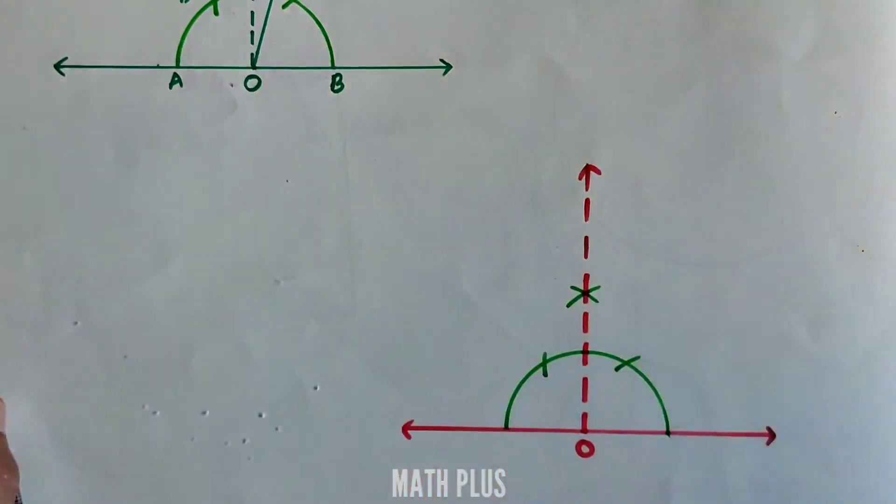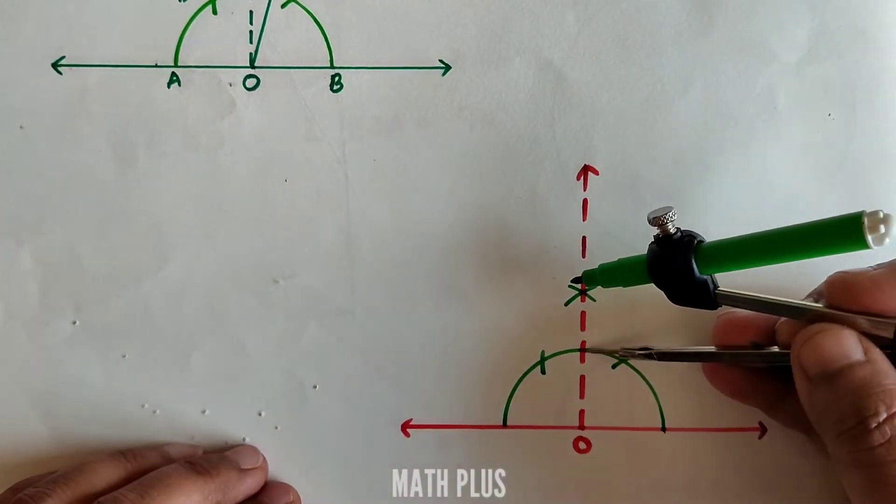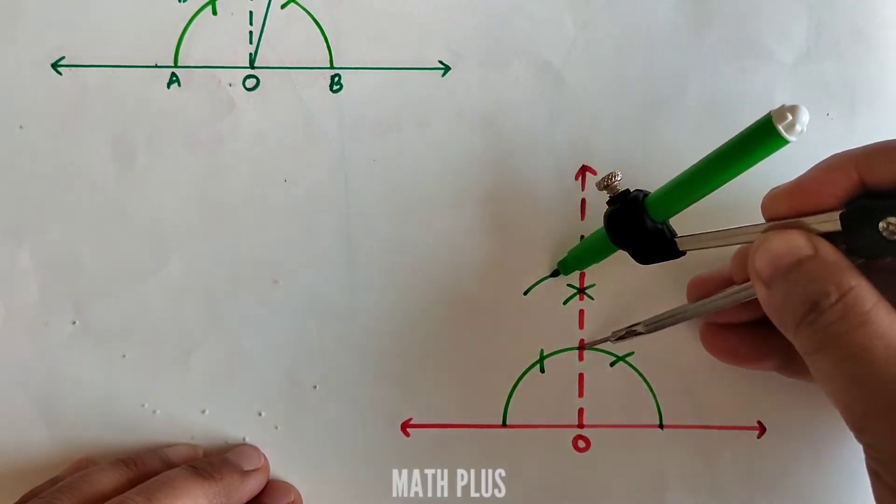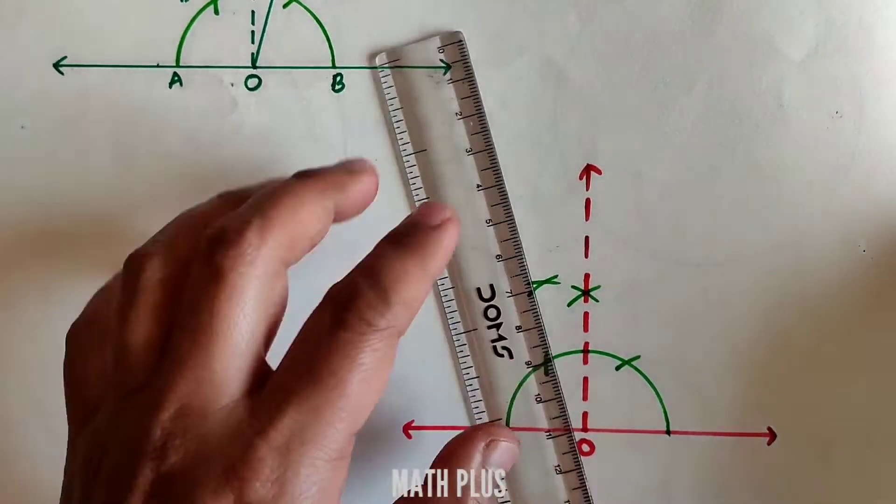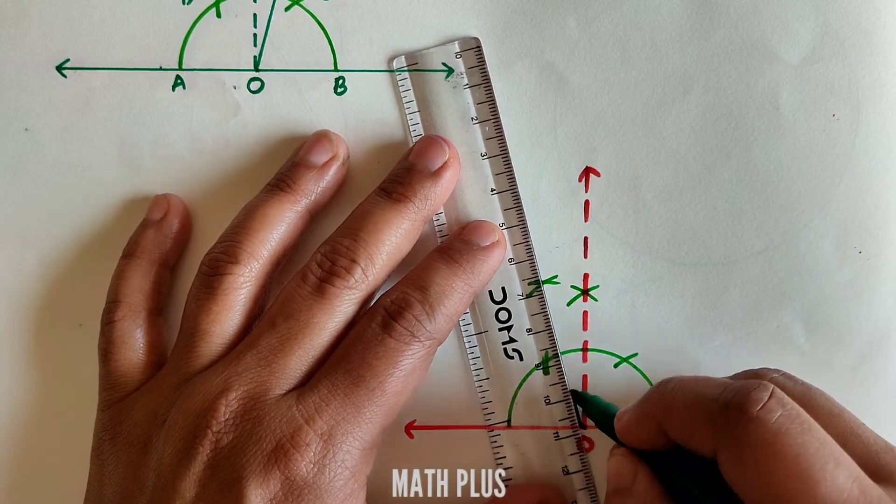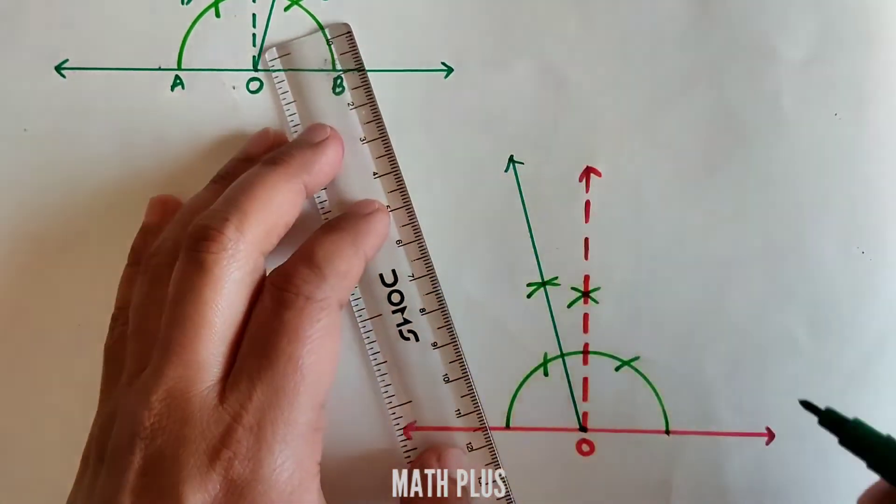Now the intersection of 90 degrees and 120 degrees is 105 degrees. So at these points when we draw an arc and we get an intersection point, join that point with O and draw a line.